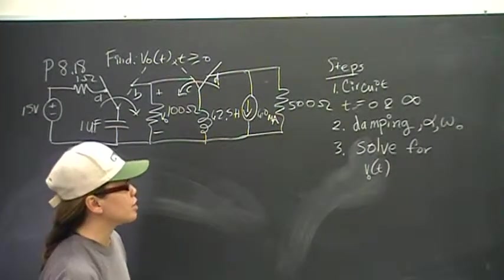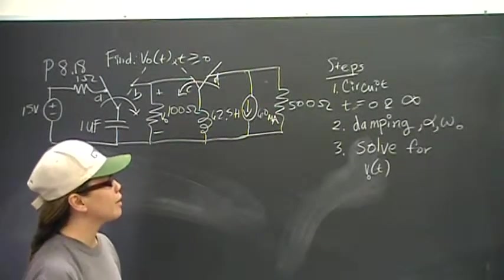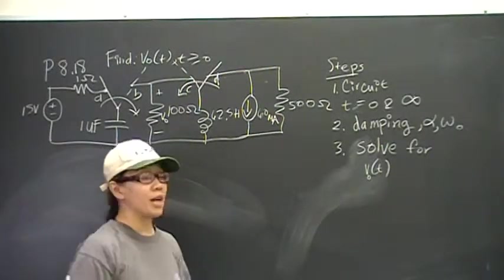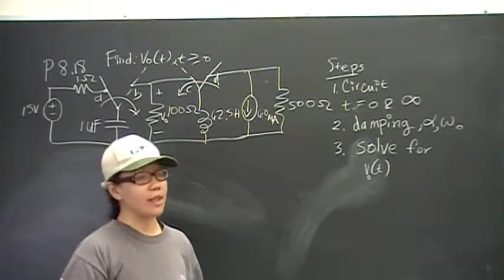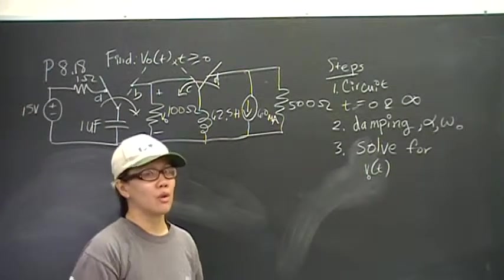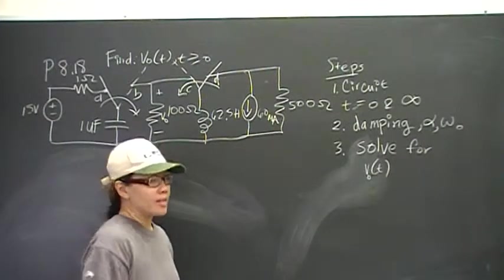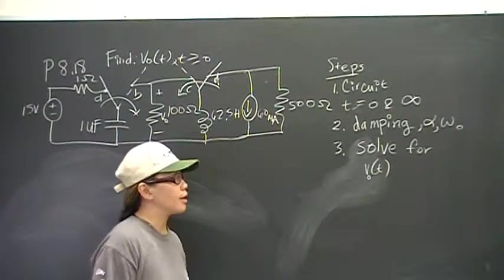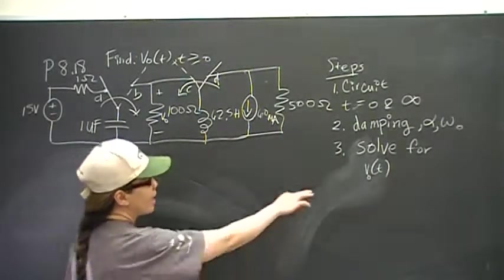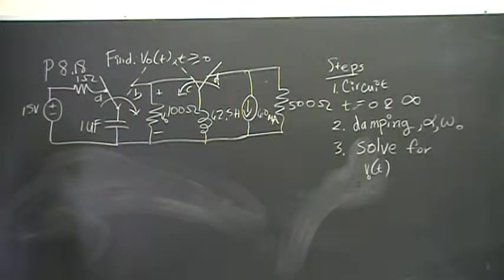We're going to be looking at this step response. We have to take a look at the condition at time zero and then the condition as the circuit reaches its steady state. And those are the two conditions. And then next, after we do that, we're going to look at the damping, which means looking at alpha and omega naught, because that tells us what type of response we're looking at: overdamped, critically damped, or underdamped.